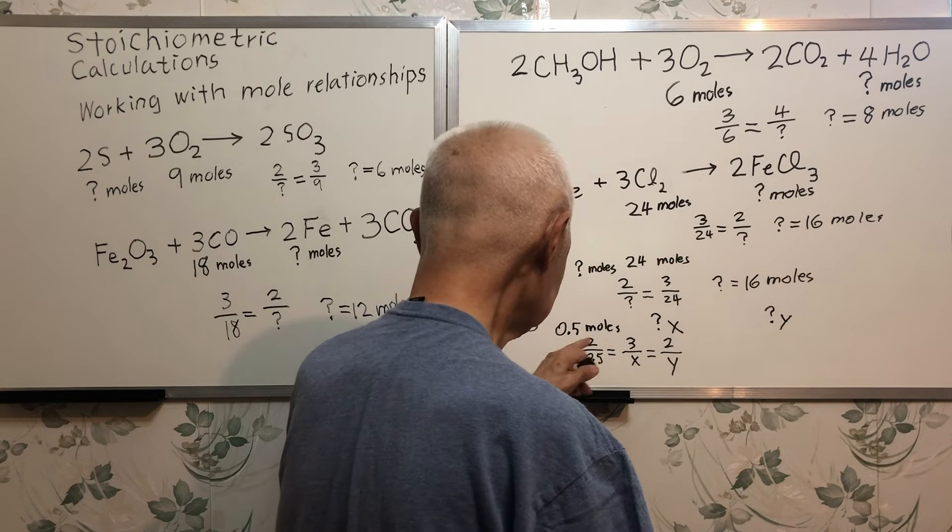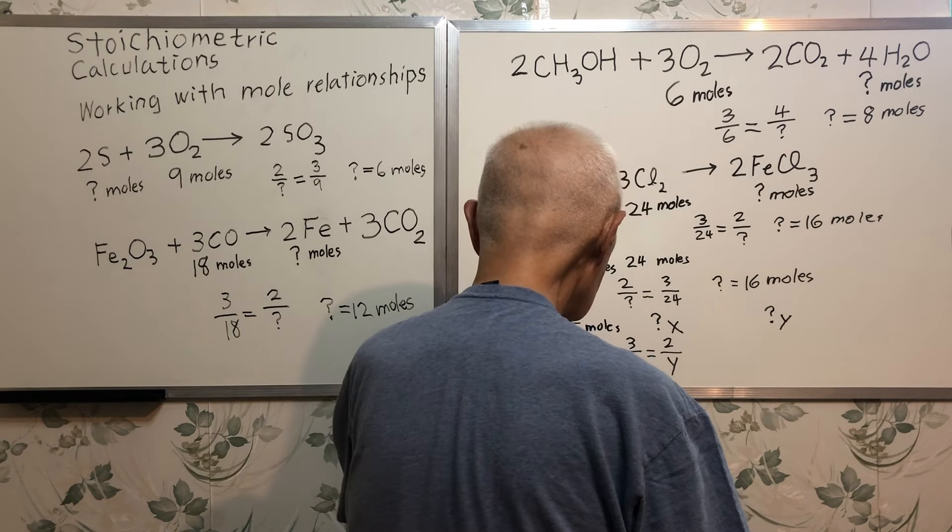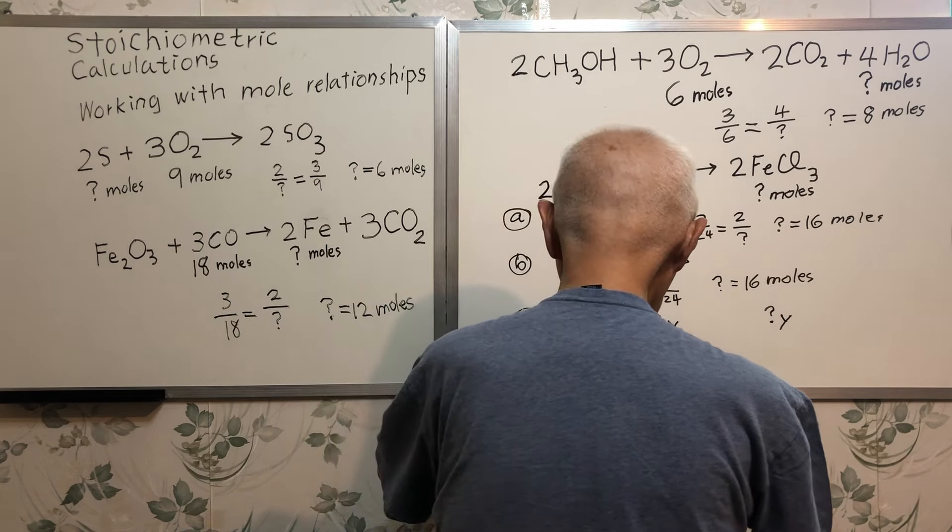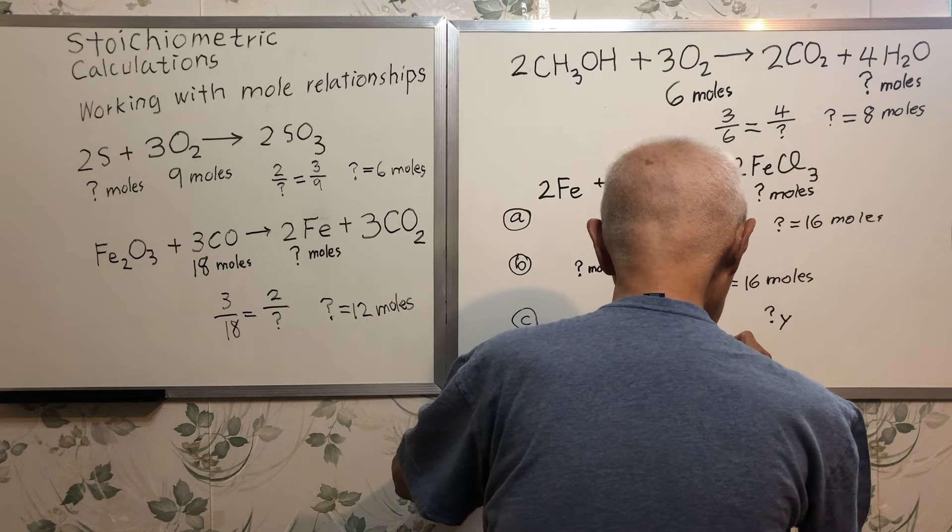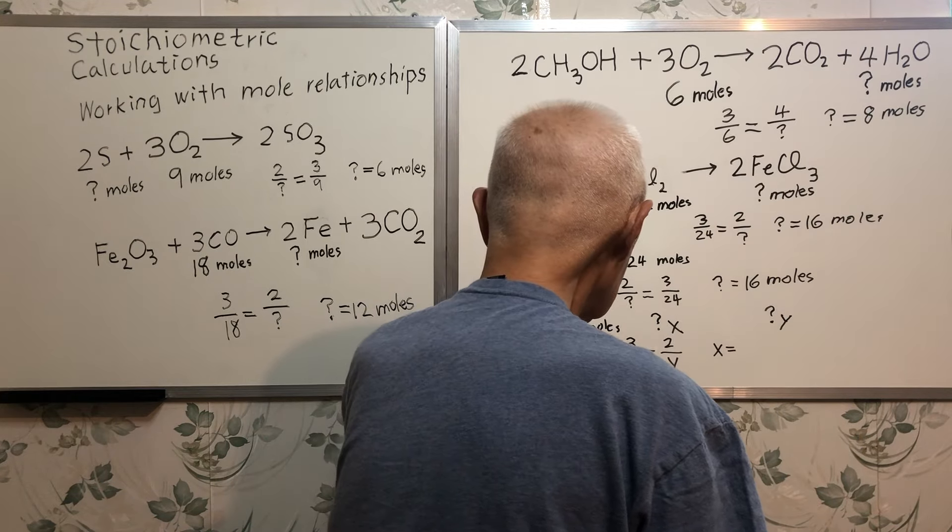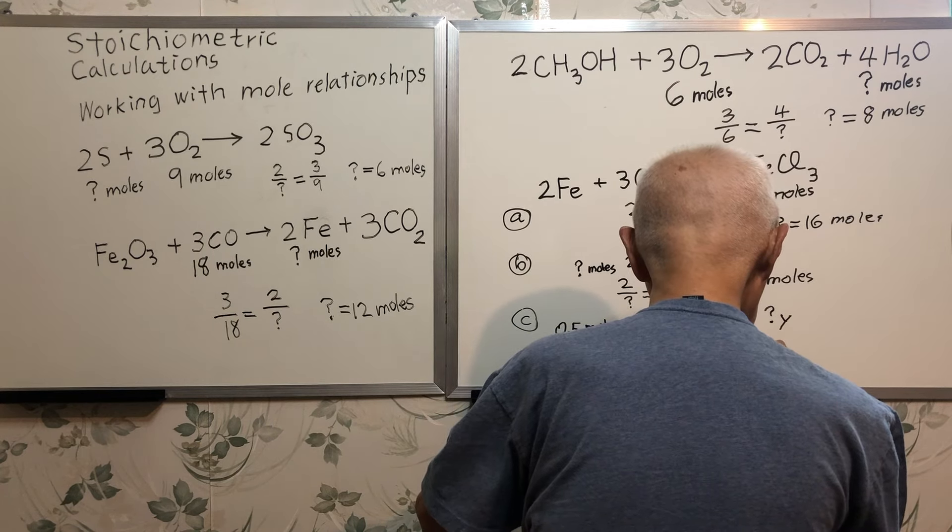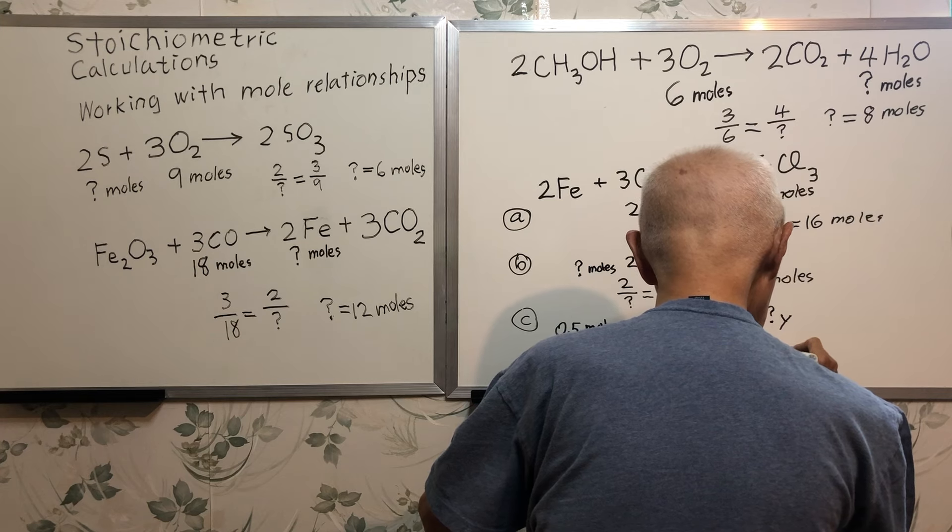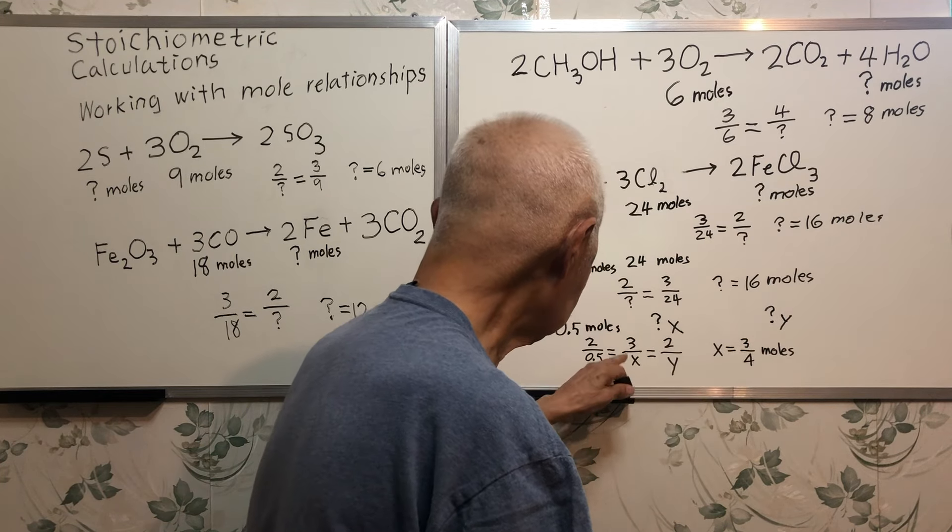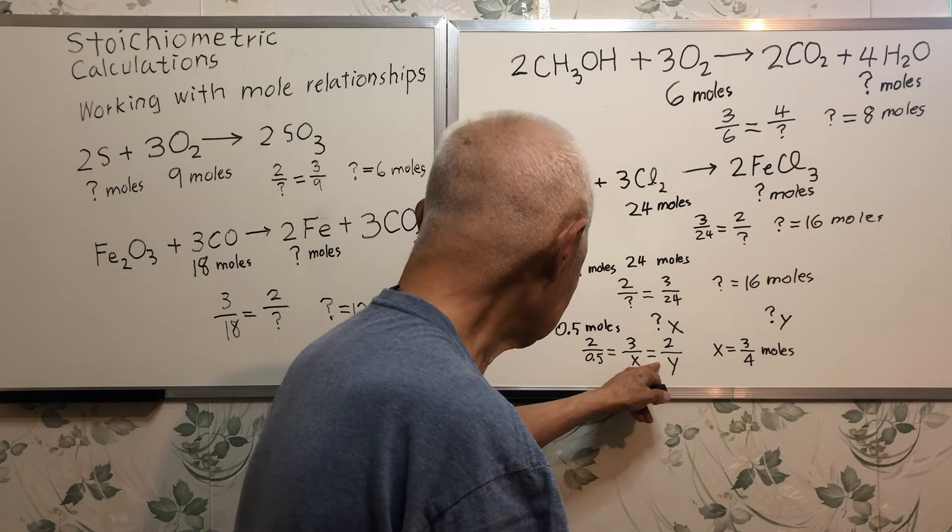So what is x? x is 3 over 3, three quarters of a mole. What is y? y is 0.5.